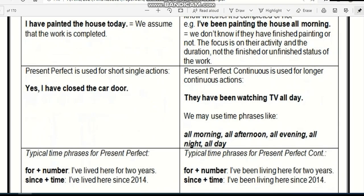Then, present perfect is used for short single actions. For example, I have closed the car door. But present perfect continuous is used for longer continuous actions. For example, they have been watching TV all day. We may use time phrases like all morning, all afternoon, all evening, all night, all day, and so on.